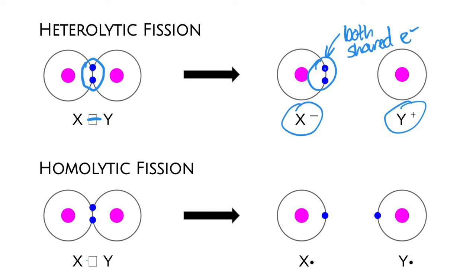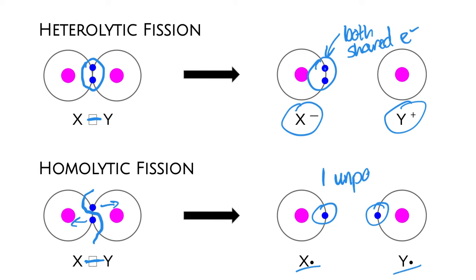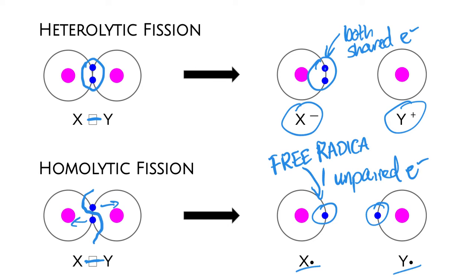In homolytic fission, when we break the bond between X and Y, one electron goes with X and one goes with Y. We create species that each have one unpaired electron, and anything with an unpaired electron is called a free radical. This is how we generate free radicals.